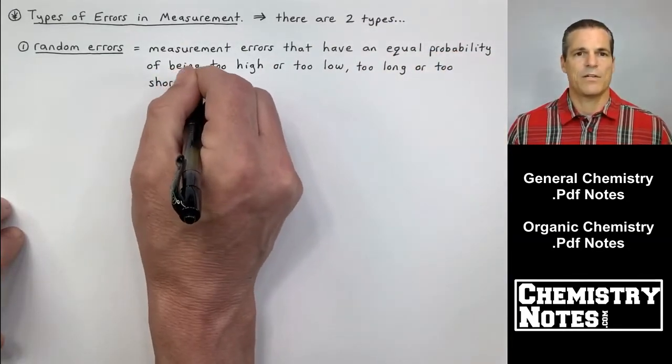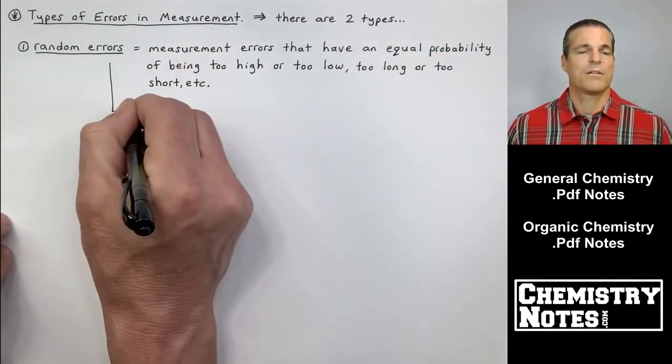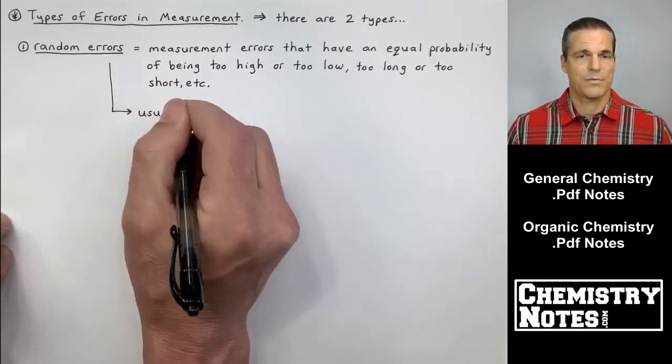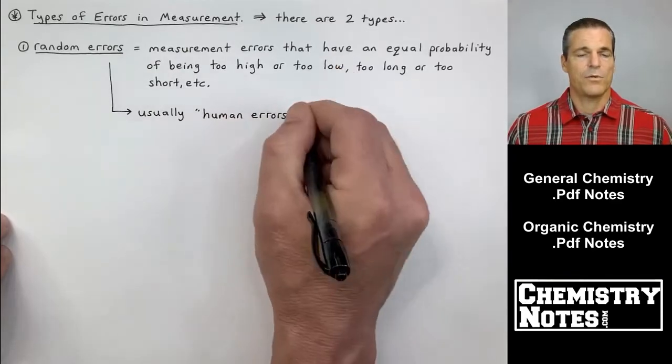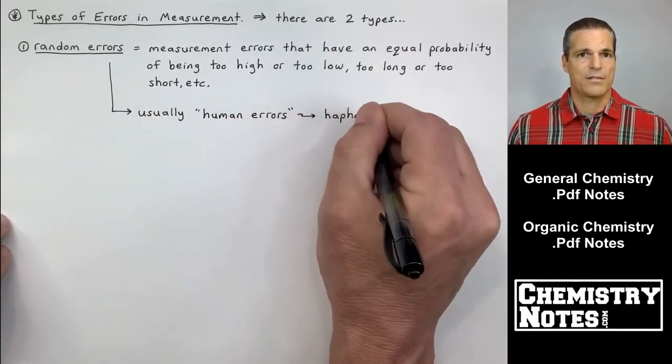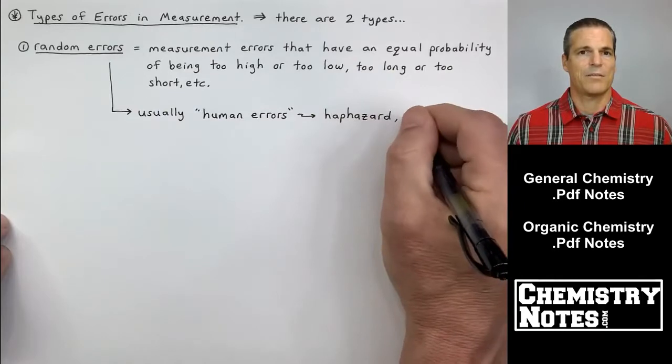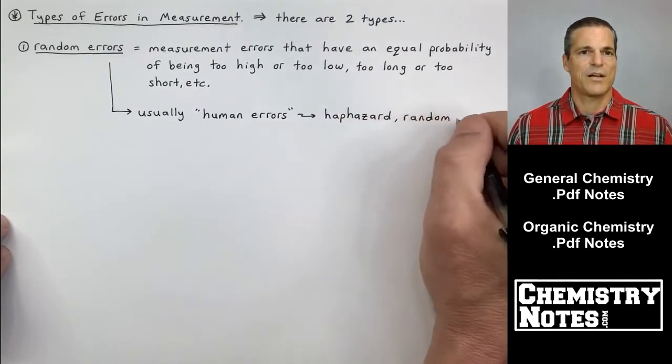Types of error and measurement. There are two types of errors. There are random errors, which are essentially human errors. And then there's number two. When I get to number two, it's going to be systematic errors. Systematic errors tend to be instrumentation errors.